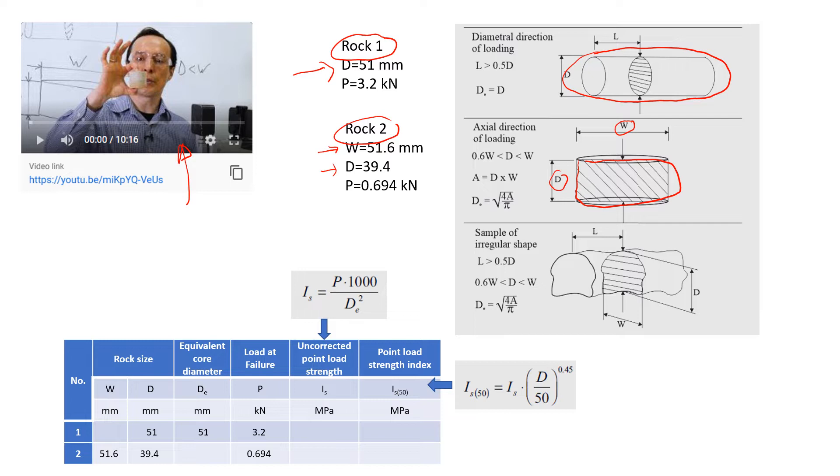When we performed the test, the first rock was pretty hard so the pressure at failure was 3.2 kilonewtons. The second rock, when you see the video, you'll see that the rock was a little bit weathered, so the force we applied to failure was quite low, 0.694 kilonewtons.